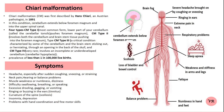Chiari malformation is primarily caused by a combination of genetic factors and abnormal brain or skull development. There are different types of Chiari Malformation, and the severity and symptoms can vary. The main types are: Type 1, involving cerebellar tonsils.